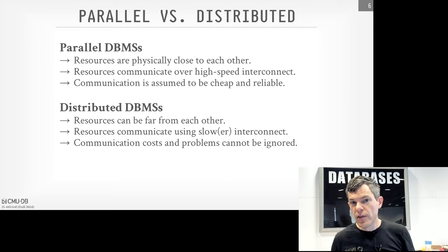There are two high-level approaches to query parallelism. The first is inter-query parallelism, where you have multiple queries from different connections or application requests running simultaneously. Most systems just do first-come, first-served. In some systems like DB2, you can specify transaction or queuing priorities based on username, so the CEO might have their queries run faster than somebody in sales. If all queries are read-only, this is pretty easy because you don't need to coordinate between queries since no one's going to update anything.